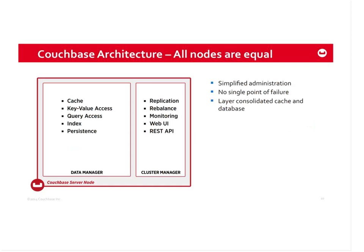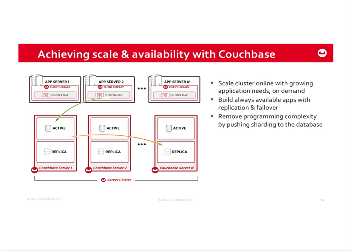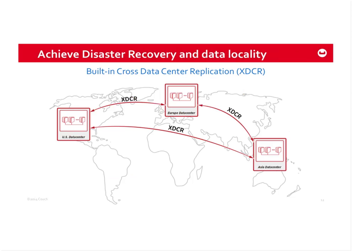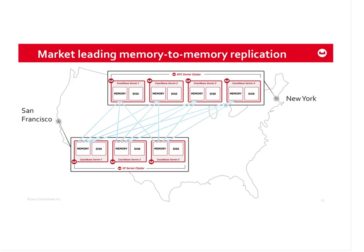Some unique aspects: there's only one node type, so a single instance of Couchbase Server is responsible for all required services. Replication is a key part of availability. Cross data center replication is also important — some of our very largest customers operate multiple data centers. We accomplish this through memory-to-memory replication, whether within a single data center or across multiple data centers, making that replication fast.